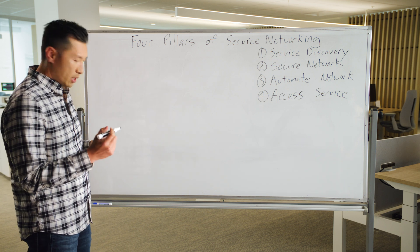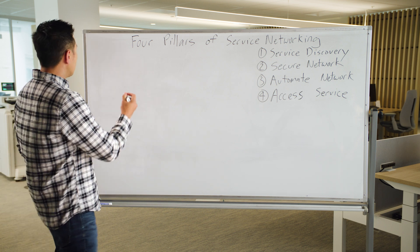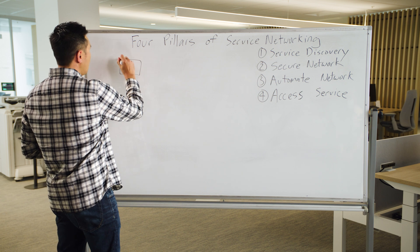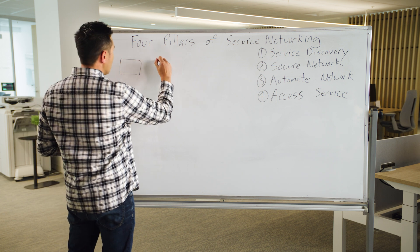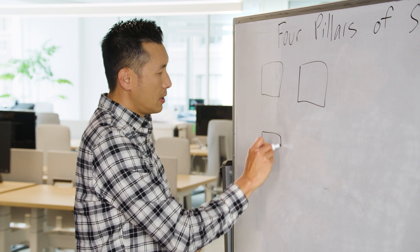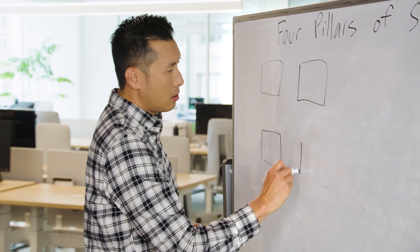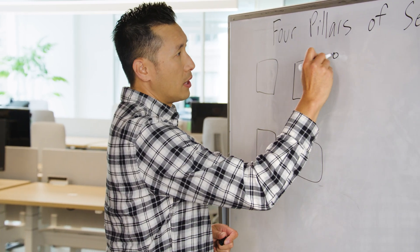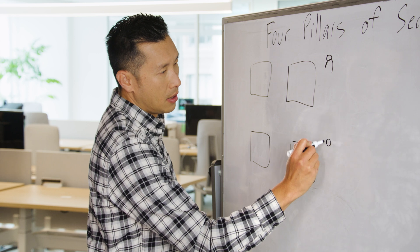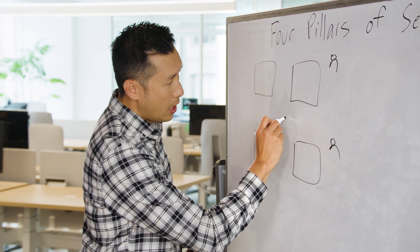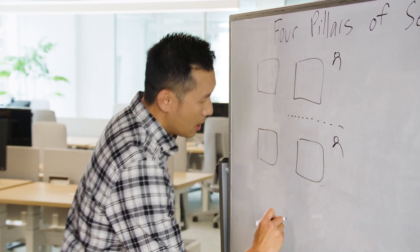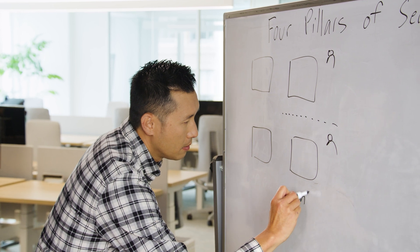We'll start with the first one with an example. Within an organization, it likely has many countless numbers of services that are all spread out across different teams, different networks, and different run times.